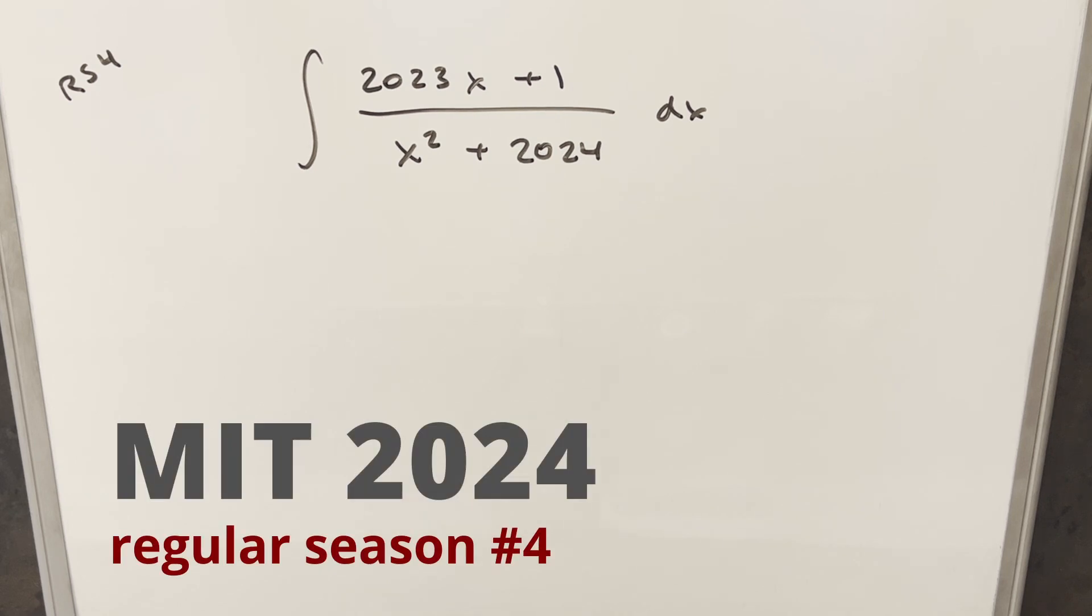Okay, we have here today another integral from the MIT integration. It'll be 2024 regular season number 4. We have the integral of 2023x plus 1 over x squared plus 2024 dx.